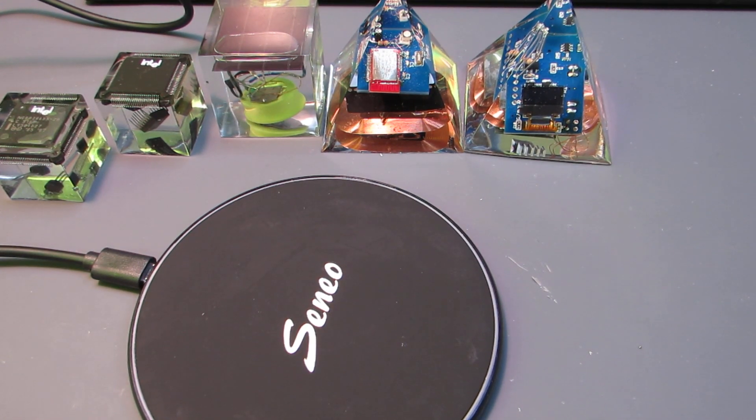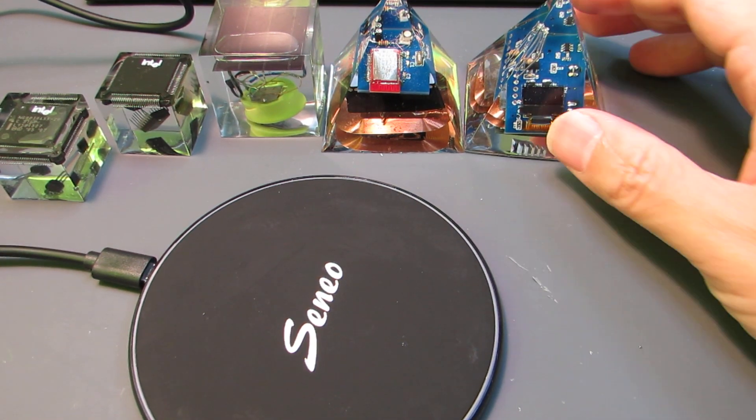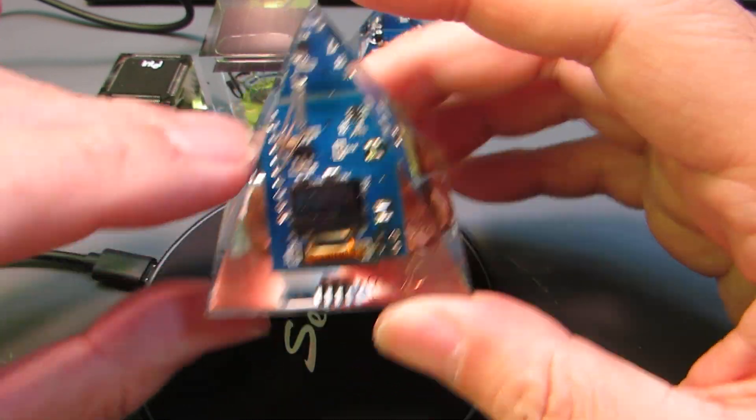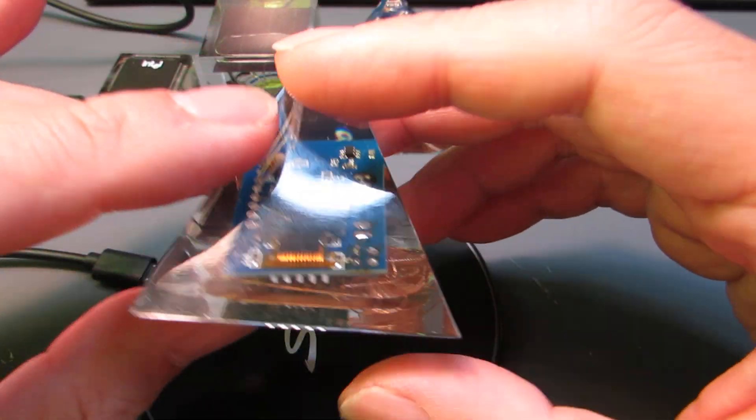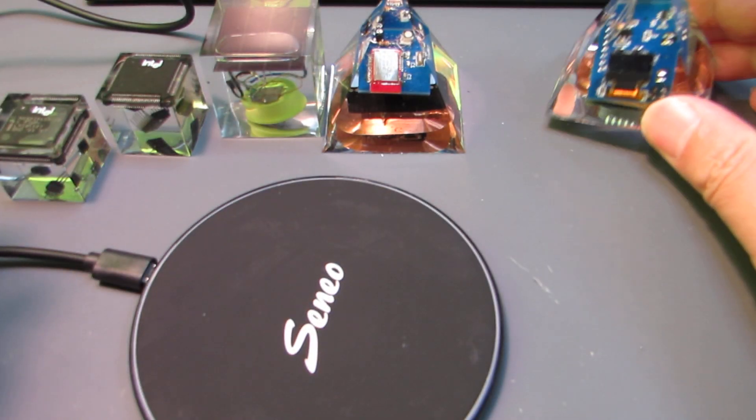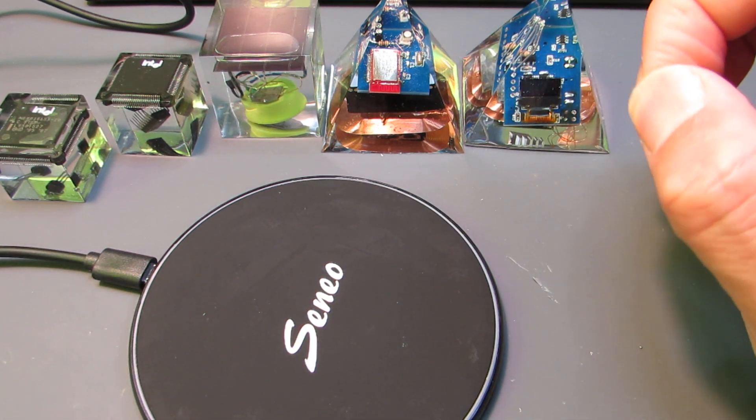Hello, as I presented before, I made several things related to this super clear epoxy resin. Some of them include electronic circuits and the power is driven by Qi. This time I want to make something, just an object.